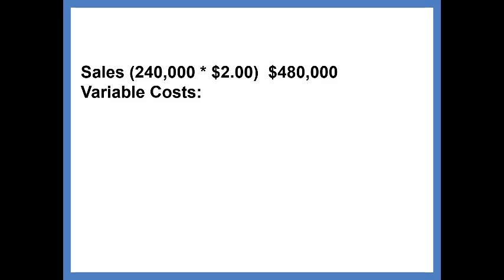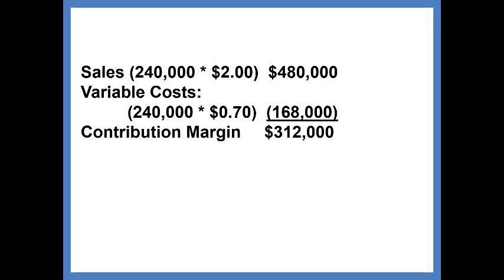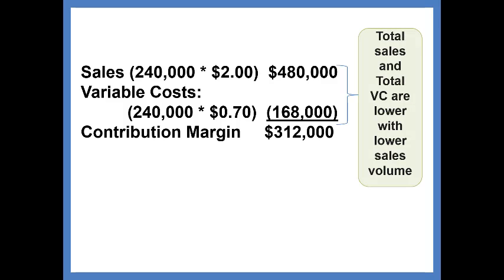The new contribution margin will be sales, 240,000 customers times $2 per customer, or $480,000, minus variable costs, 240,000 customers times 70 cents, or $168,000, leaving a contribution margin of $312,000. Notice that the sales and variable costs will be lower when activity is lower, as is demonstrated here.